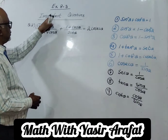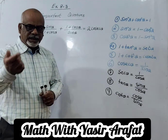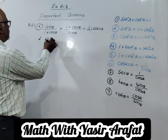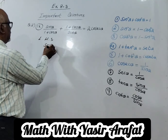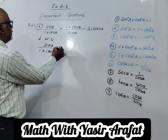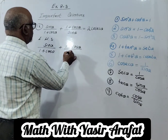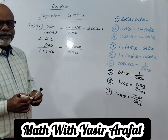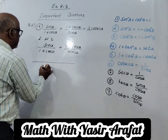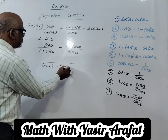Now, students, come to the next important question. This is question number 2 of the 9th part of the same exercise 8.3 — another important question. Let's take out the left hand side, which is sin θ over (1 + cos θ) plus (1 + cos θ) over sin θ.